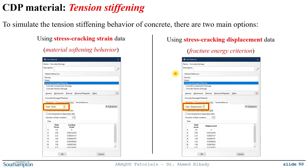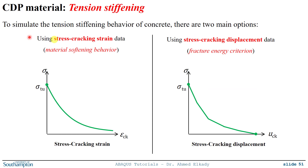The second option, which I'm going to discuss in more detail in this tutorial, uses the cracking displacement — so we define stress with respect to cracking displacement. This option is referred to as the fracture energy criterion. So the first approach defines stress-strain material softening (stress vs. epsilon cracking), while today's option defines the tension stiffening behavior using stress versus cracking displacement u_ck, which is the fracture energy criterion.